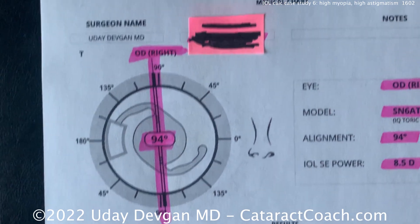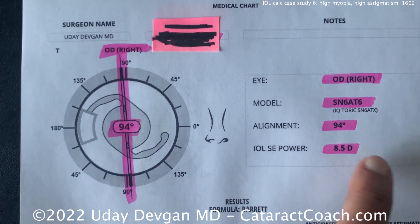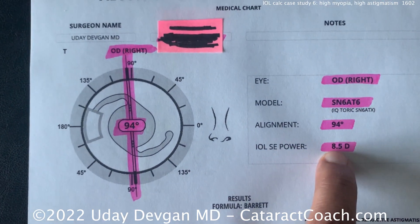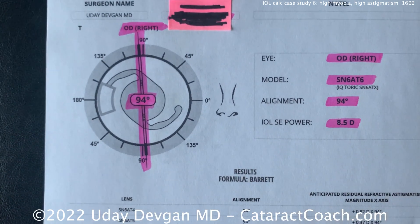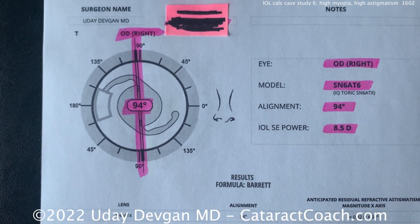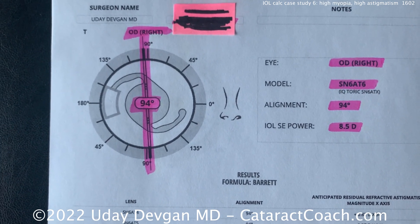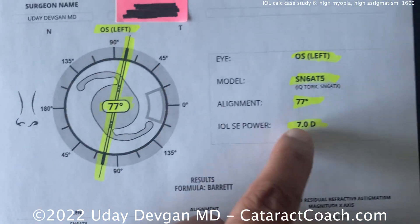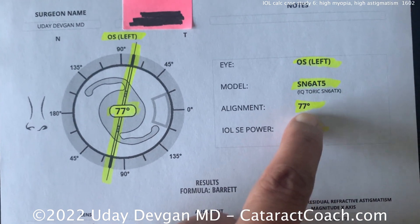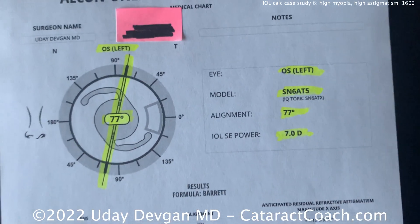So we do our toric calculations. Toric calculations show: right eye, planning for an 8.5 — there's the astigmatism, a T6 lens. The lens will fix 2.5 diopters of total astigmatic correction at the corneal plane. Left eye, 7 diopters — a T5 lens is going to fix 2 diopters at the corneal plane.